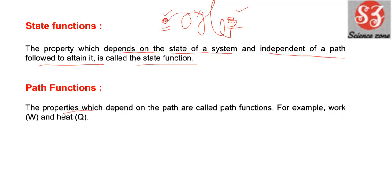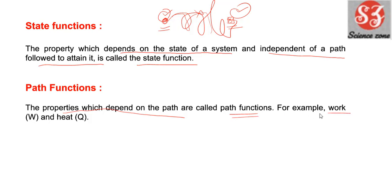Next है path function। Path function वो property है जो depend करती है on the pathway — मतलब इस state से उस state में जाने के लिए कौन सा path follow हुआ है। यदि उस path पर आपका system depend कर रहा है तो उसे कहेंगे path function। जैसे कि work और heat।